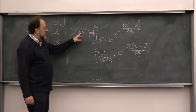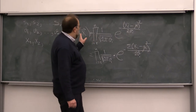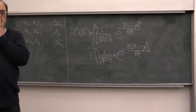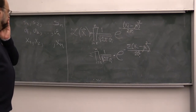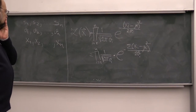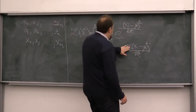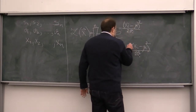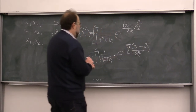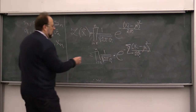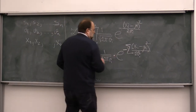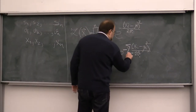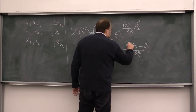A student points out that since Vi depends on i, the sum should be over the entire fraction (xi minus μ) squared over Vi, not just over the numerator. The correction is accepted: the exponent is the sum from i equals 1 to n of (xi minus μ) squared divided by 2Vi, where each term in the sum has its own Vi in the denominator.